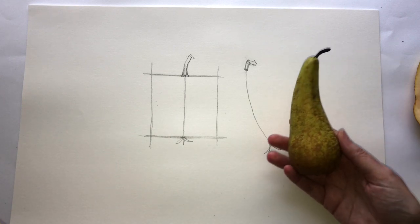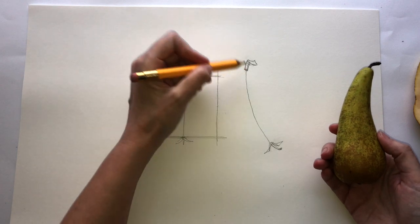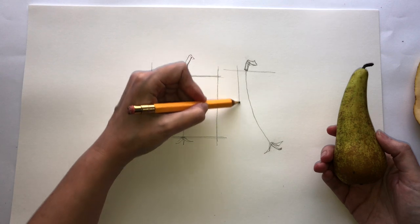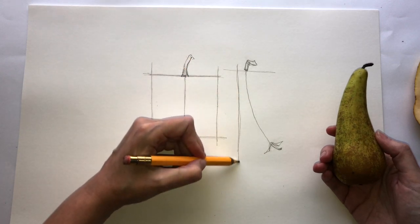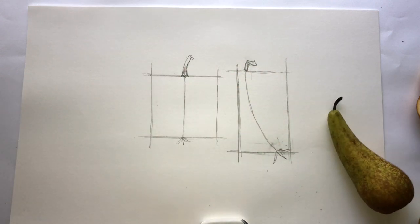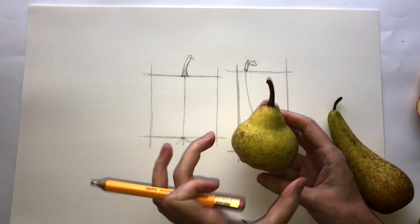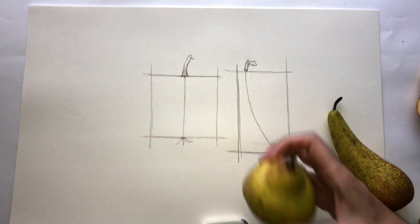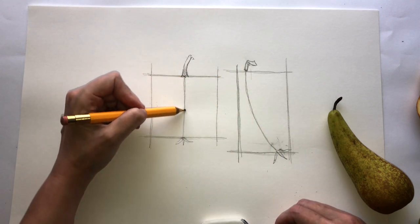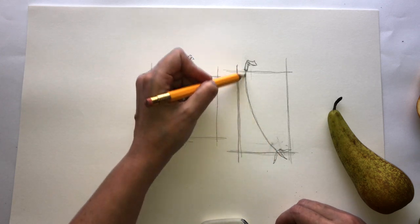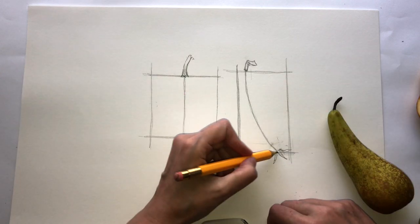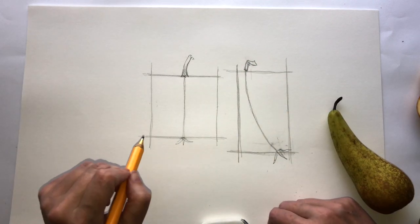Now, sometimes, for example with this conference pear here, we don't have a square, we have a rectangle. So here I've got my rectangle to contain my pear in. And I've got another pear here which is actually a rectangle in the other way—it's wider than it's high. So if you do your rectangle around with the axis going through, either through the center or curved, then you have a shape to contain your drawing in. That's very useful because normally you wouldn't know how far to go with your edges.